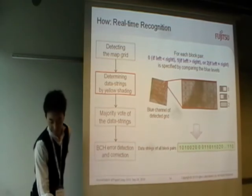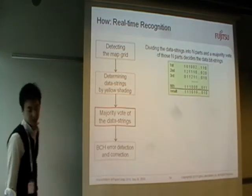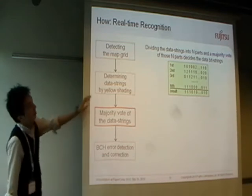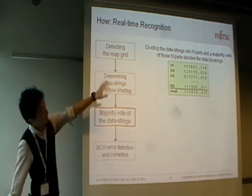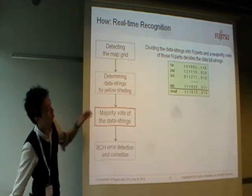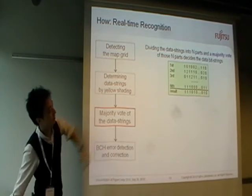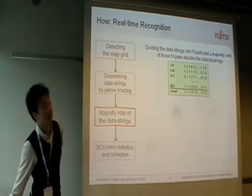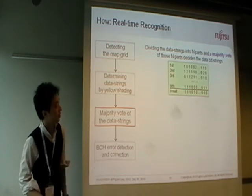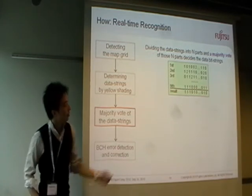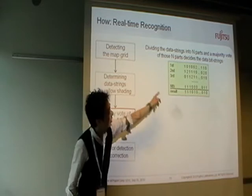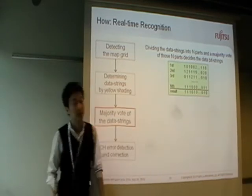In the third step, the data bit strings are divided into n parts and the majority vote of those n parts decides the final data bit strings. In these figures, the red numbers are collected by majority vote.